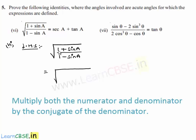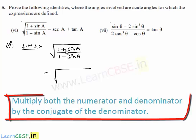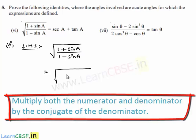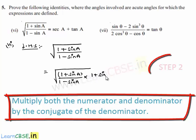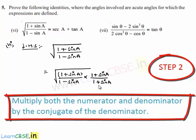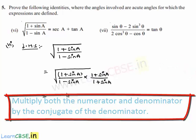Let us multiply and divide the given expression inside the square root by 1 plus sin A. Then we get 1 plus sin A by 1 minus sin A, multiplied by 1 plus sin A, all divided by 1 minus sin A, that is 1 plus sin A in the denominator.